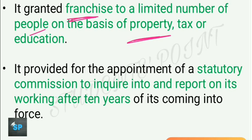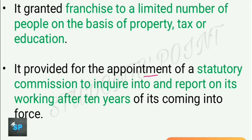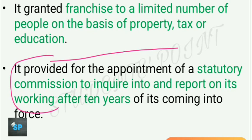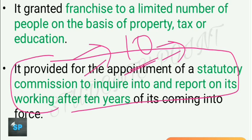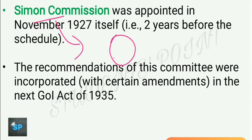This act provided for the appointment of a statutory commission to inquire into and report on its working after 10 years of coming into force. However, a committee called the Simon Commission was appointed two years early, in November 1927, because elections were due in Britain. Simon Commission gave several recommendations — some were accepted, some were not — and subsequently the Government of India Act 1935 was passed.